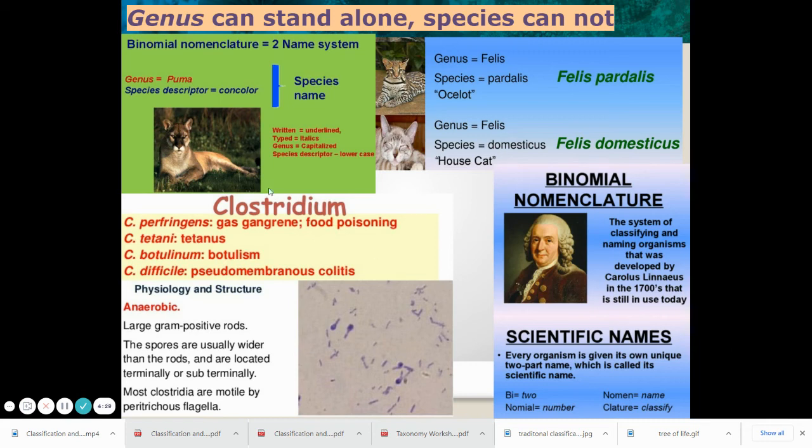And then there's some other examples here. If you just want to take a look around, here we see the genus of Felis. So Felis pardalis is an ocelot and a Felis domesticus is a domesticated cat, a house cat. So we look at these two organisms. They're of the same genus, but they're of a different species.